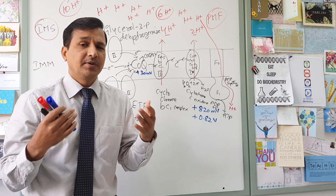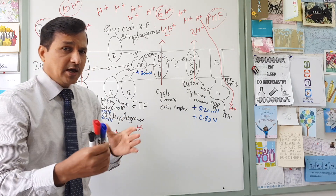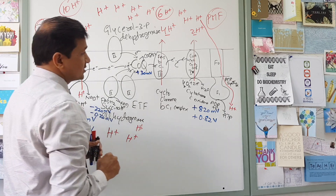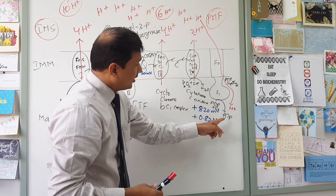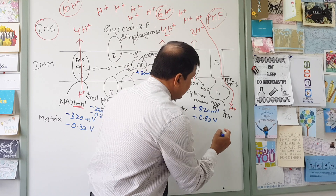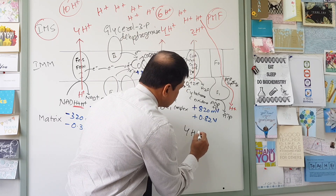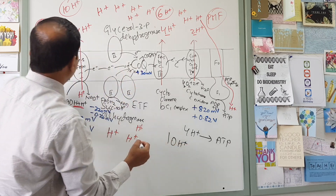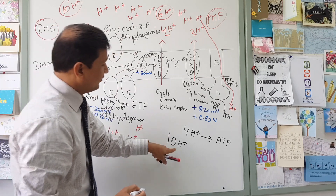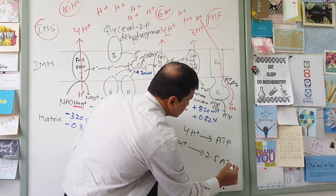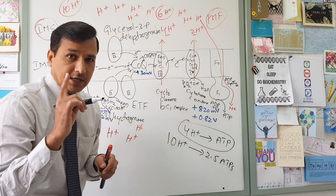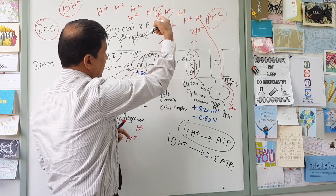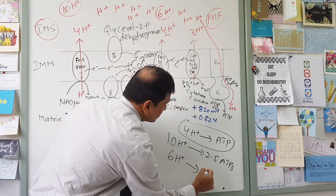Each molecule of NADH plus H+ pumps 10 protons into the intermembrane space, while FADH2 oxidation pumps 6 protons. For every 4 protons coming through ATP synthase, 1 ATP is generated. Therefore, 10 protons from NADH oxidation yields 2.5 ATPs, and 6 protons from FADH2 oxidation yields 1.5 ATPs.